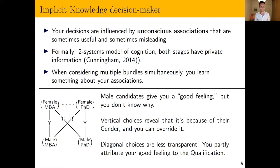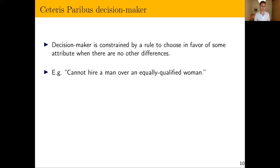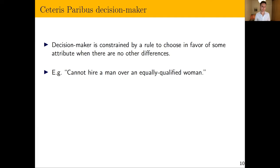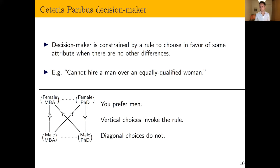The final foundation is a rule-based decision model where the decision maker is constrained to choose in favor of some attribute when that is the only difference between candidates. You sometimes see in job ads: 'We will never hire a man over an equally qualified woman.' In vertical choices you always pick the woman. But if deep down you prefer men, the rule says nothing about the diagonals, and then you pick the man — exhibiting the same intransitive cycle.